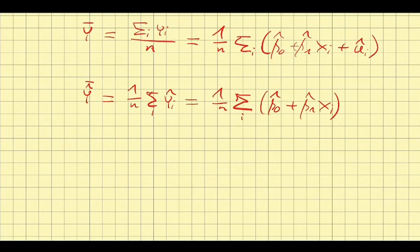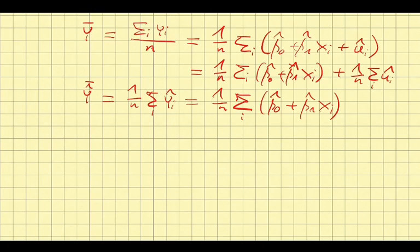What I can do is I can change this around a little bit and say this is 1 over n times the sum of this plus the average of the residuals. We can see immediately here now that if those residuals are zero, if the sum of those residuals is zero, those two are the same.